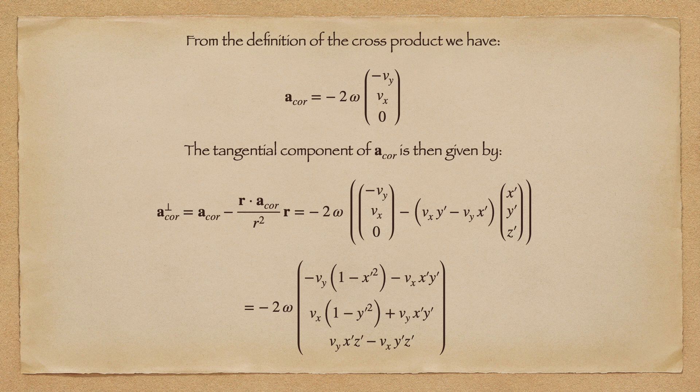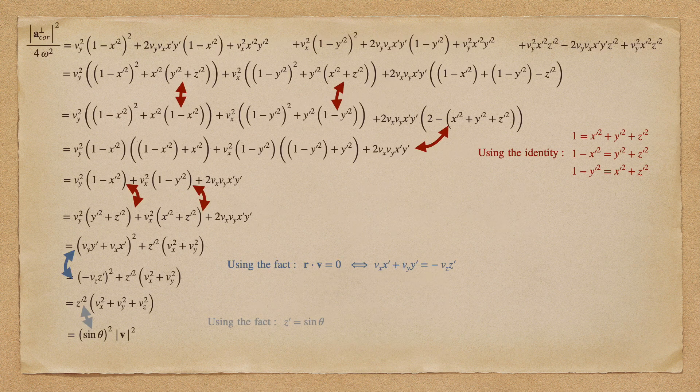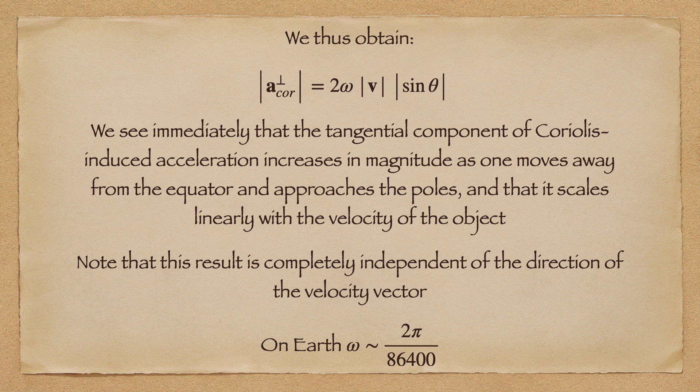We're not really interested in this vertical component at the moment, so we'll remove it using some simple vector algebra. This gives us an explicit form for the tangential acceleration due to Coriolis experienced by the body. As inelegant as the terms in this vector look, when we calculate its magnitude, we can simplify quite considerably. I've shown the details here just to reassure any flat earthers who may happen on this presentation that mathematics is not actually magic, and that we can simplify this in a series of logical steps that rely on some very simple substitutions that I have color coded for their benefit. After all of those manipulations, we end up with a very simple form for the magnitude of the tangential acceleration due to Coriolis. We see instantly that this acceleration is very small near the equator and becomes larger as one approaches the poles. We also see that the magnitude of the deflection effect scales linearly with the velocity of the object, but is independent of the direction of that velocity. In the Southern Hemisphere, latitudes are negative, so the sign of latitude is always negative, which explains why Coriolis accelerations act in the opposite sense in the Southern Hemisphere.